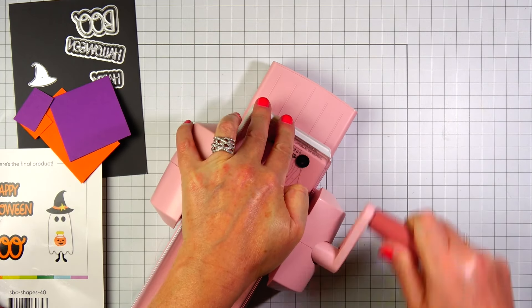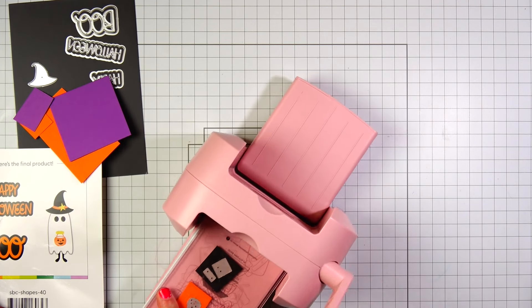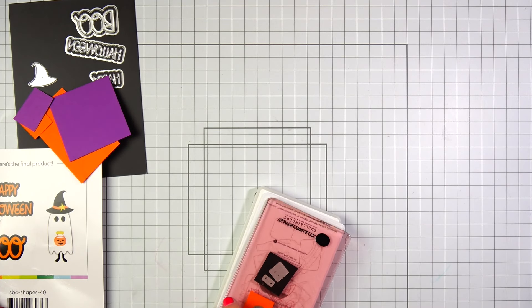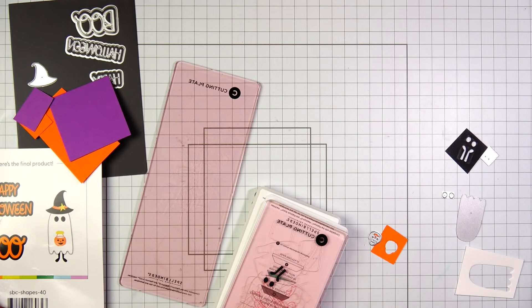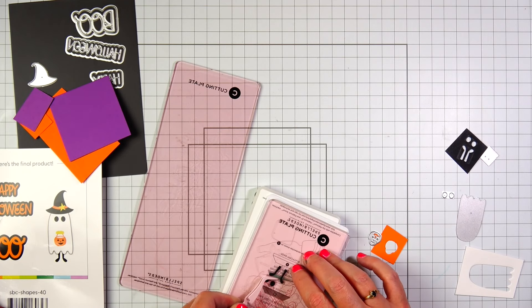I am going to be careful when it comes to getting the pumpkin and the eyes for the ghost. So I'm going to make sure I'm going to put those aside so I don't lose them. And I'm die cutting with the Spellbinders scrapbook.com Platinum Scout.